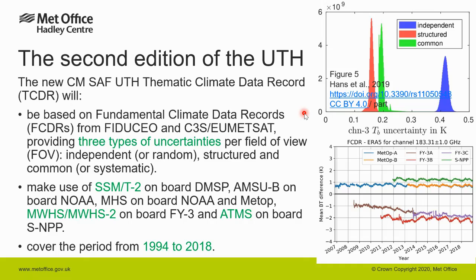The second edition of the UTH will be based on fundamental climate data records from Fiduceo and Copernicus Climate Change Service, together with EUMETSAT, providing three types of uncertainties per field of view: independent, structured, and common. You can see in this figure the distribution of these uncertainties for one month of data.